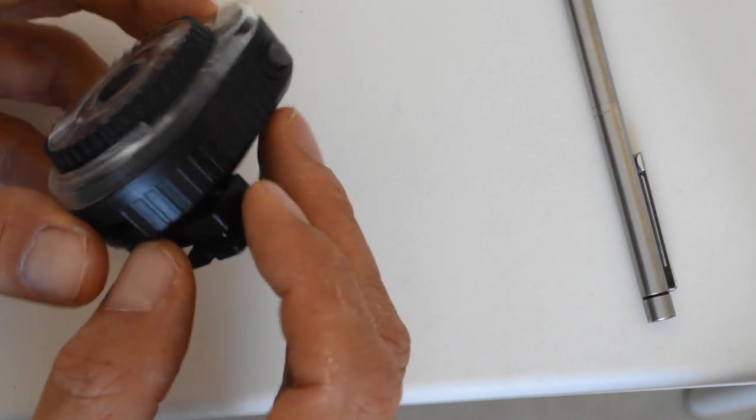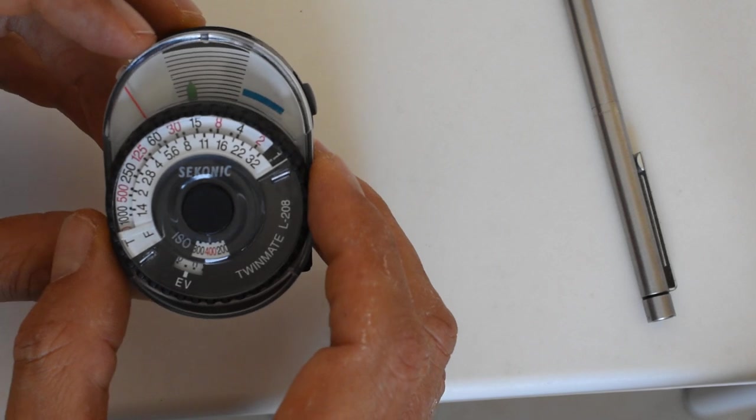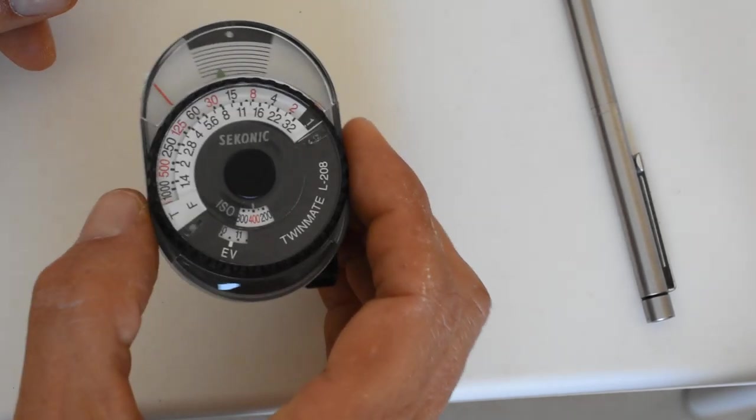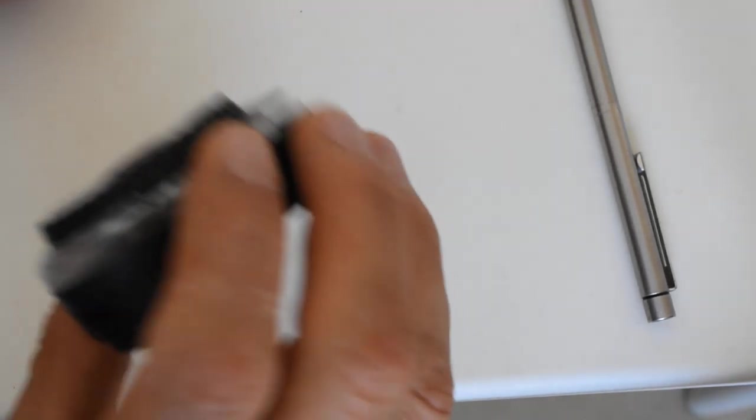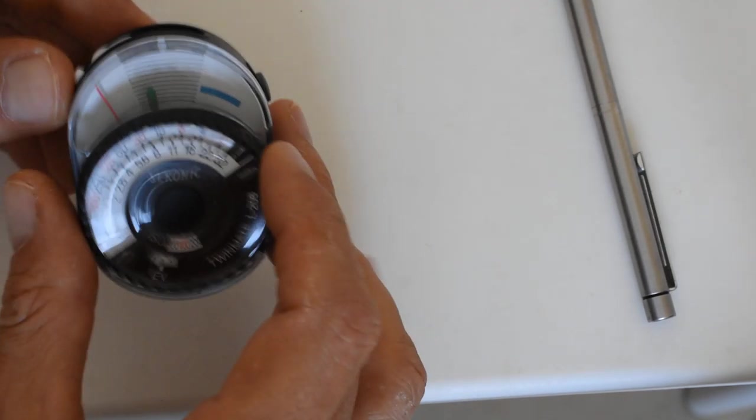Now there's no facility on here for actually aiming the light meter other than the accessory shoe attachment, but I have found it very easy and very convenient to just hold this thing in my pocket, take it out, point it at, you know, if I'm shooting a model just point it at the model in the general direction, press the button, get the reading, and go from there.